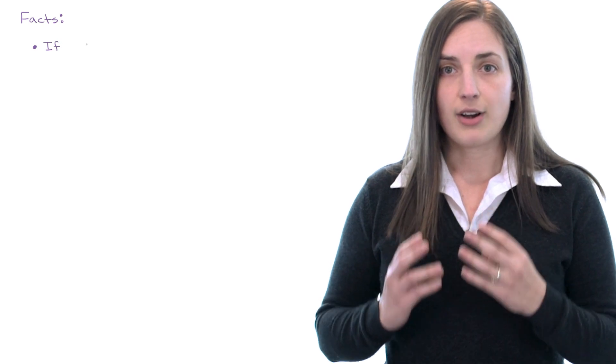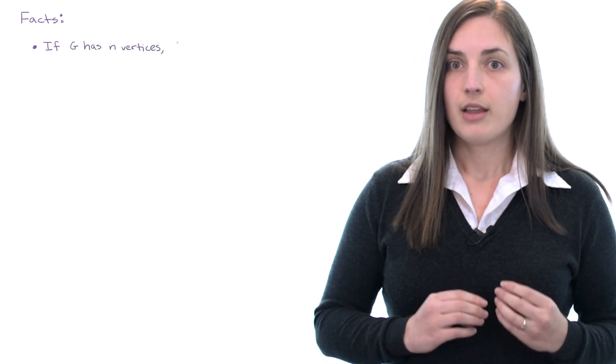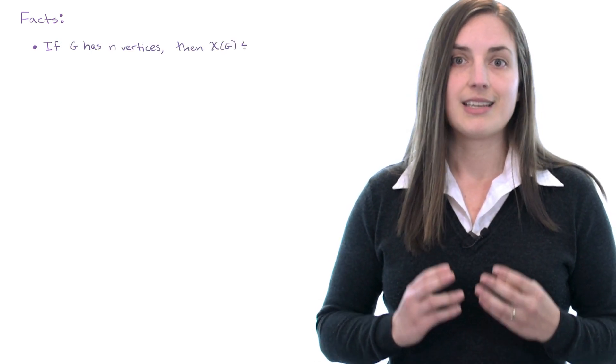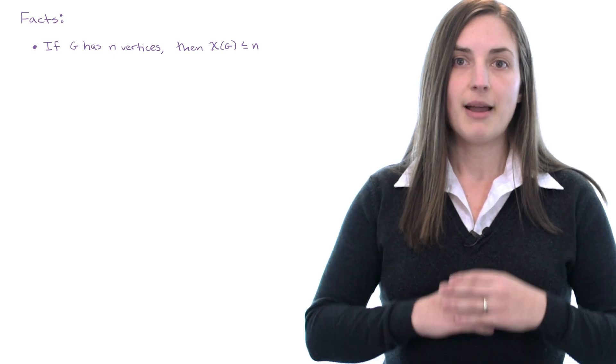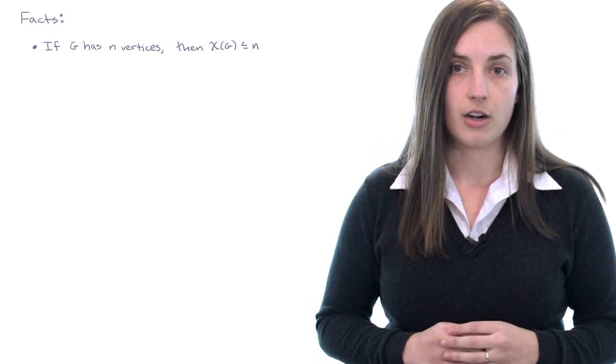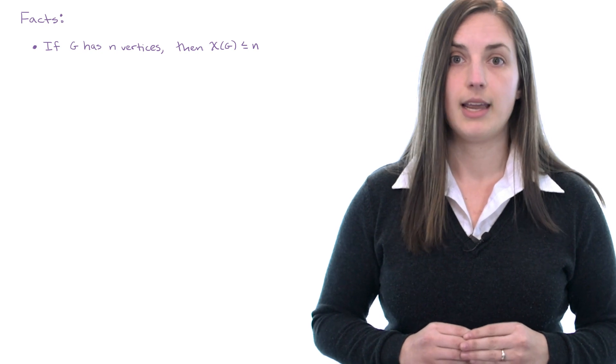Now let's talk about some basic facts to do with the chromatic number of a graph. The first fact to think about is that if a graph has n vertices then the chromatic number of the graph is at most n. Imagine just coloring every vertex of the graph a different color that clearly is going to be a coloring.